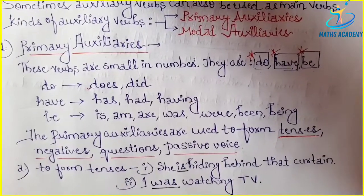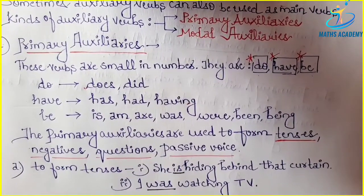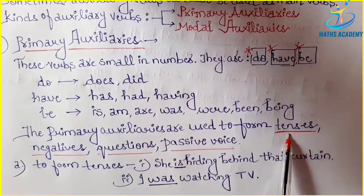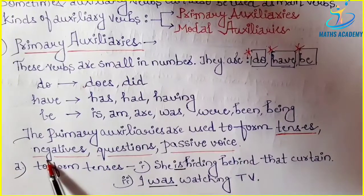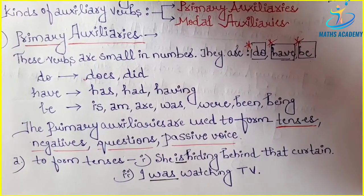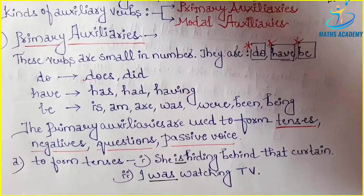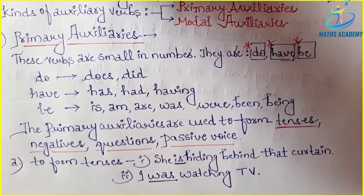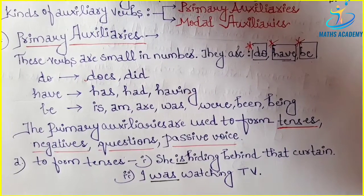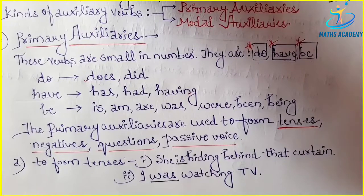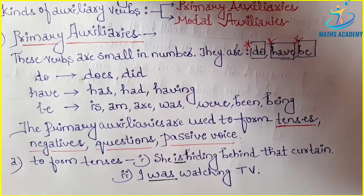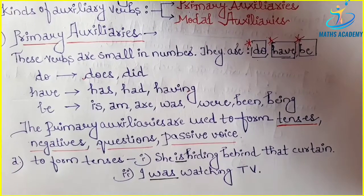Primary auxiliaries are used to form tenses, negatives, questions, and passive voice. These helping verbs — primary auxiliaries — can form tenses, negatives, questions, and passive voice, and help in all such sentences in basic English grammar. We will see this ahead in the session through examples.